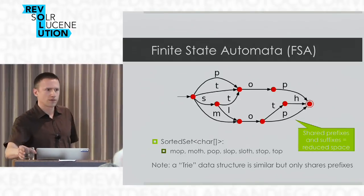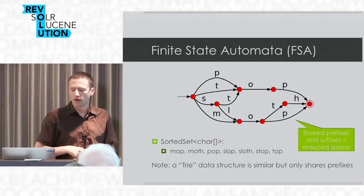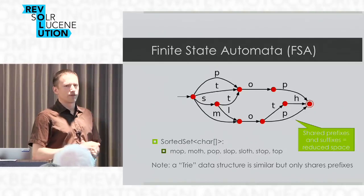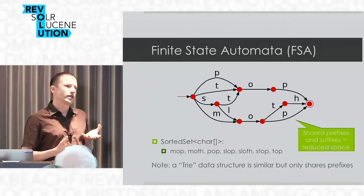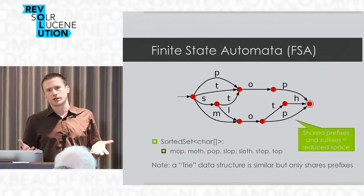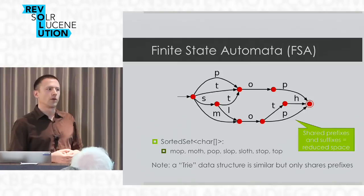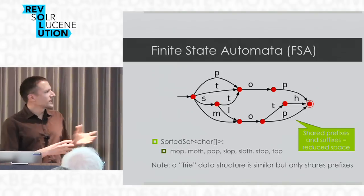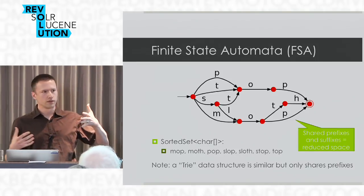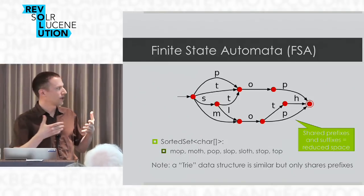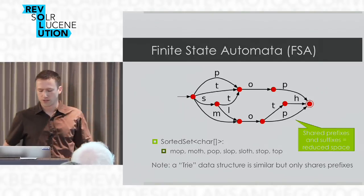Finite state transducers. I ripped off a few slides from Michael McCandless, who co-built the FST technology in Lucene. First, a little bit of background. This is a picture of a finite state automaton — it's pretty simple. It's really a set: imagine a set of strings. The strings don't have to literally be strings of characters, but these analogies work really well when it's character-based. It's like a sorted set. What's nice about this structure is that there's internal sharing at both the heads and the ends in terms of the actual nodes. So if you have lots of text strings, you get space savings by sharing nodes at the beginning and end.